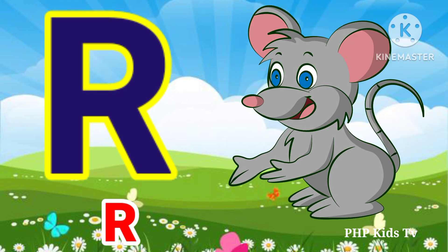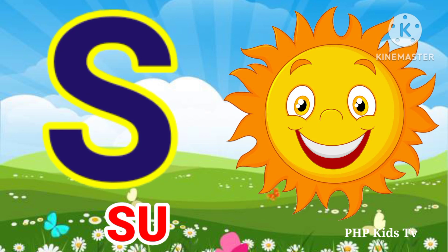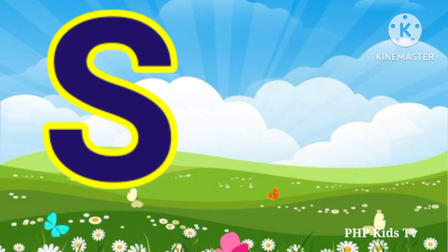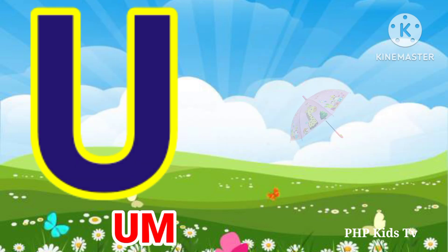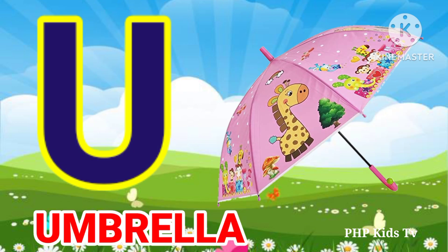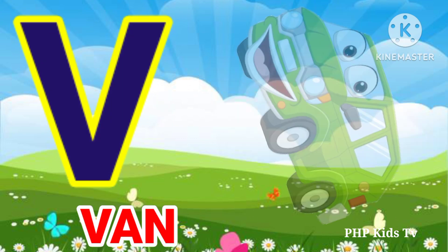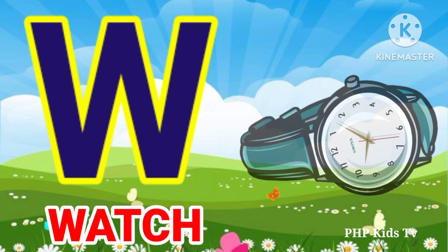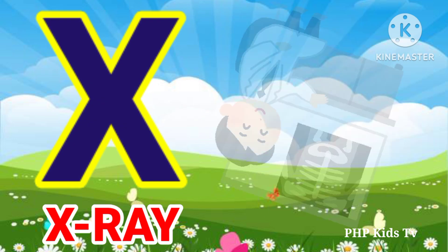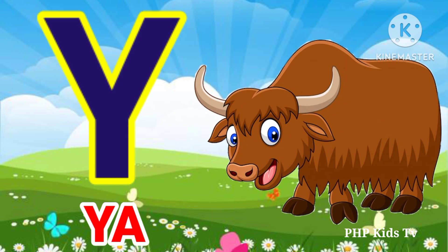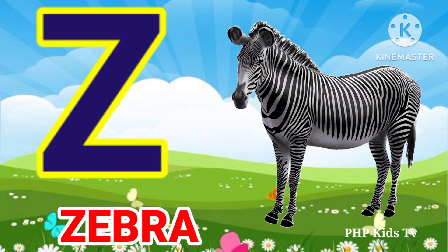R for red. S for sun. T for tiger. U for umbrella. V for van. W for watch. X for xylophone. Z for zebra.